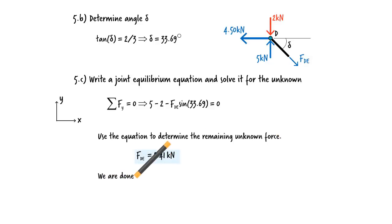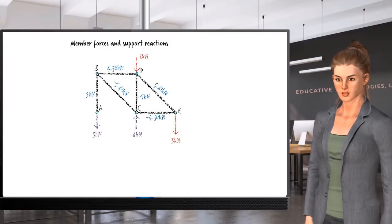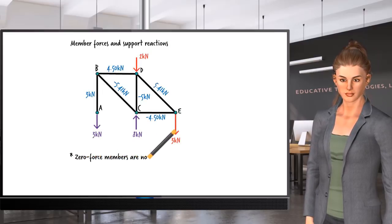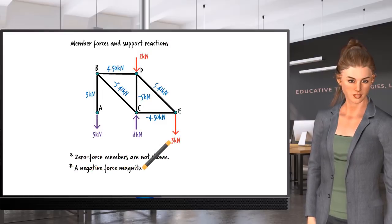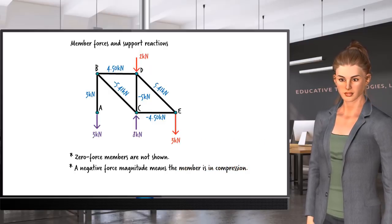Let's summarize the results. Here are the member forces and the support reactions. Note that the zero force members are not shown in the diagram. A negative force magnitude means the member is in compression. A positive magnitude indicates the member is in tension.